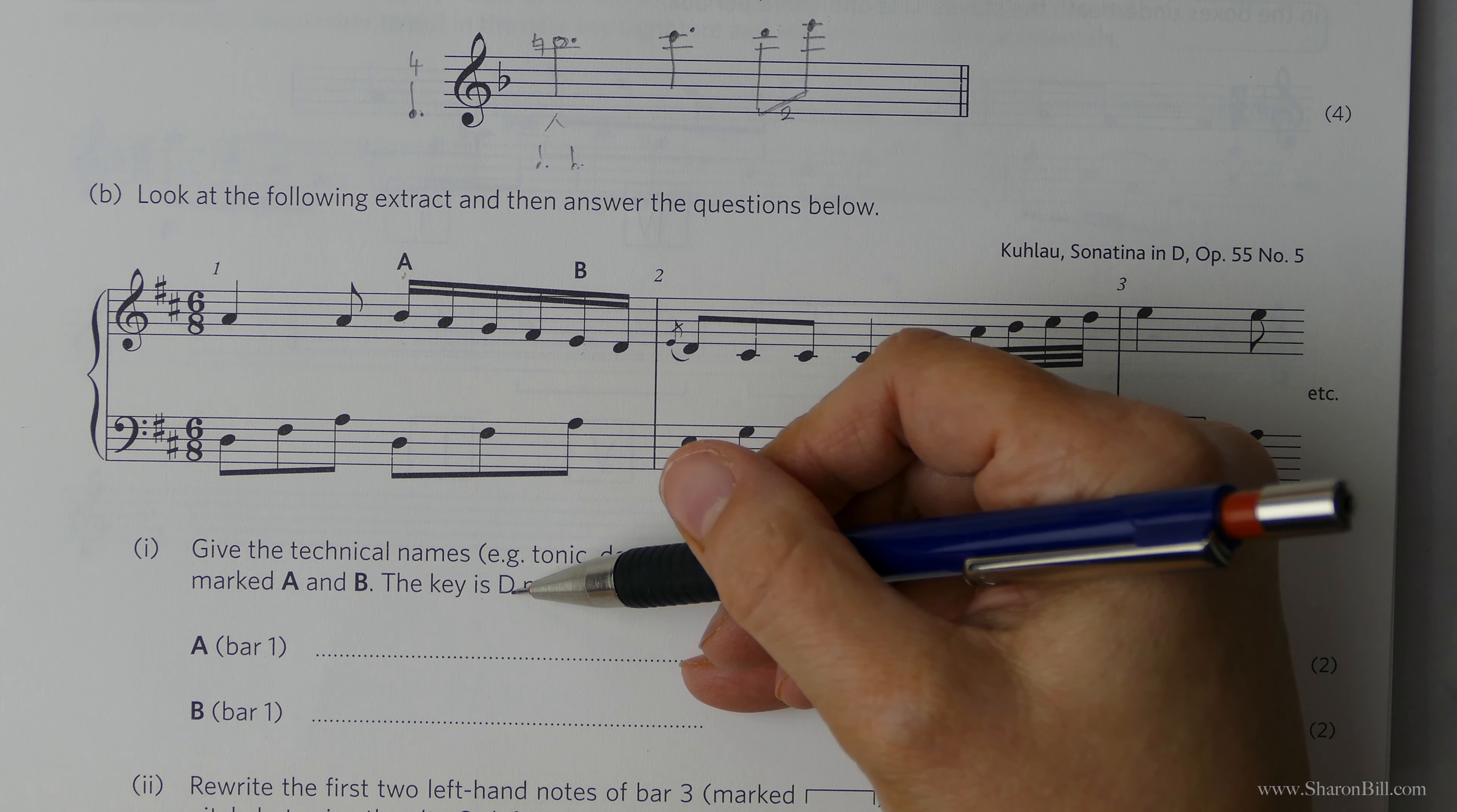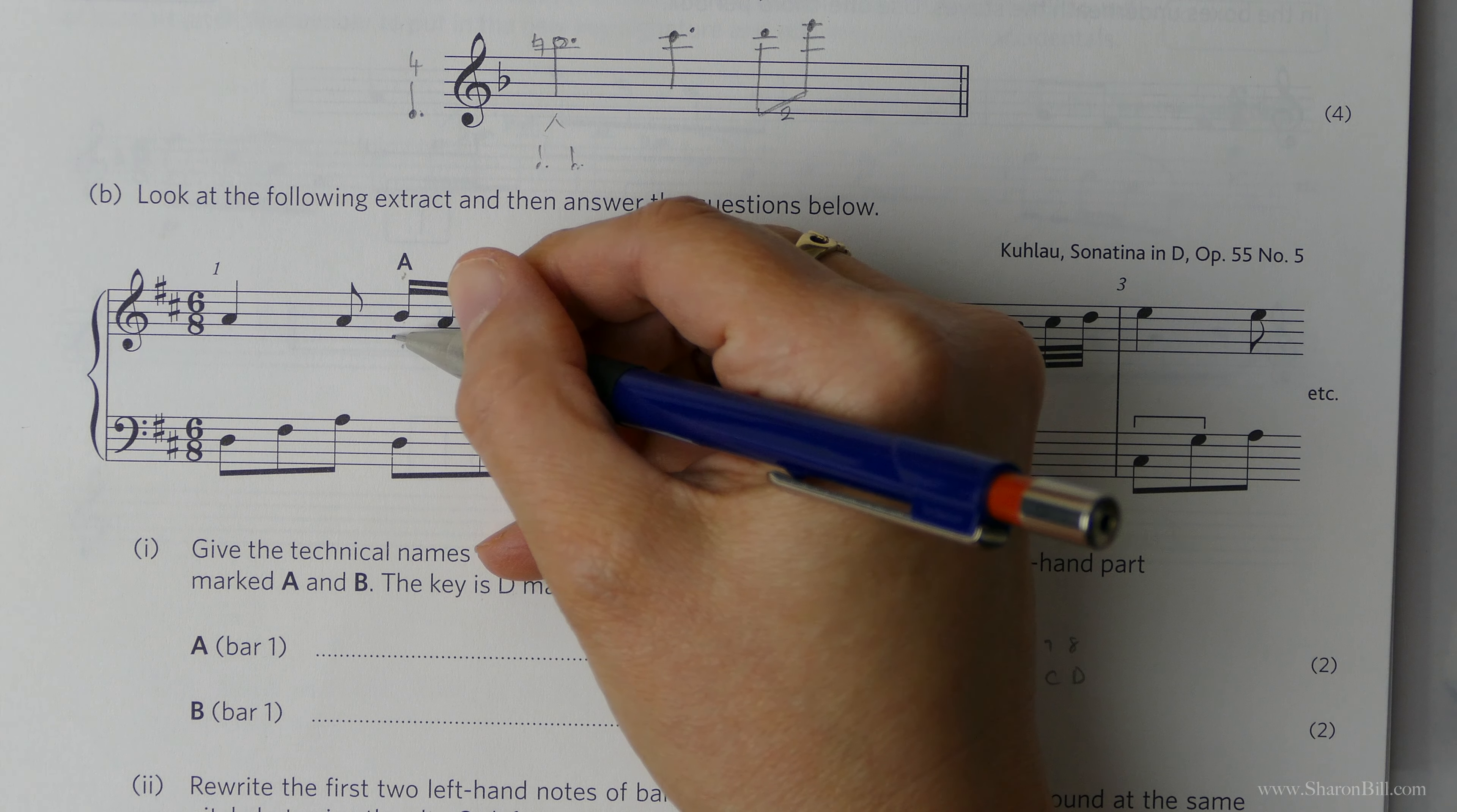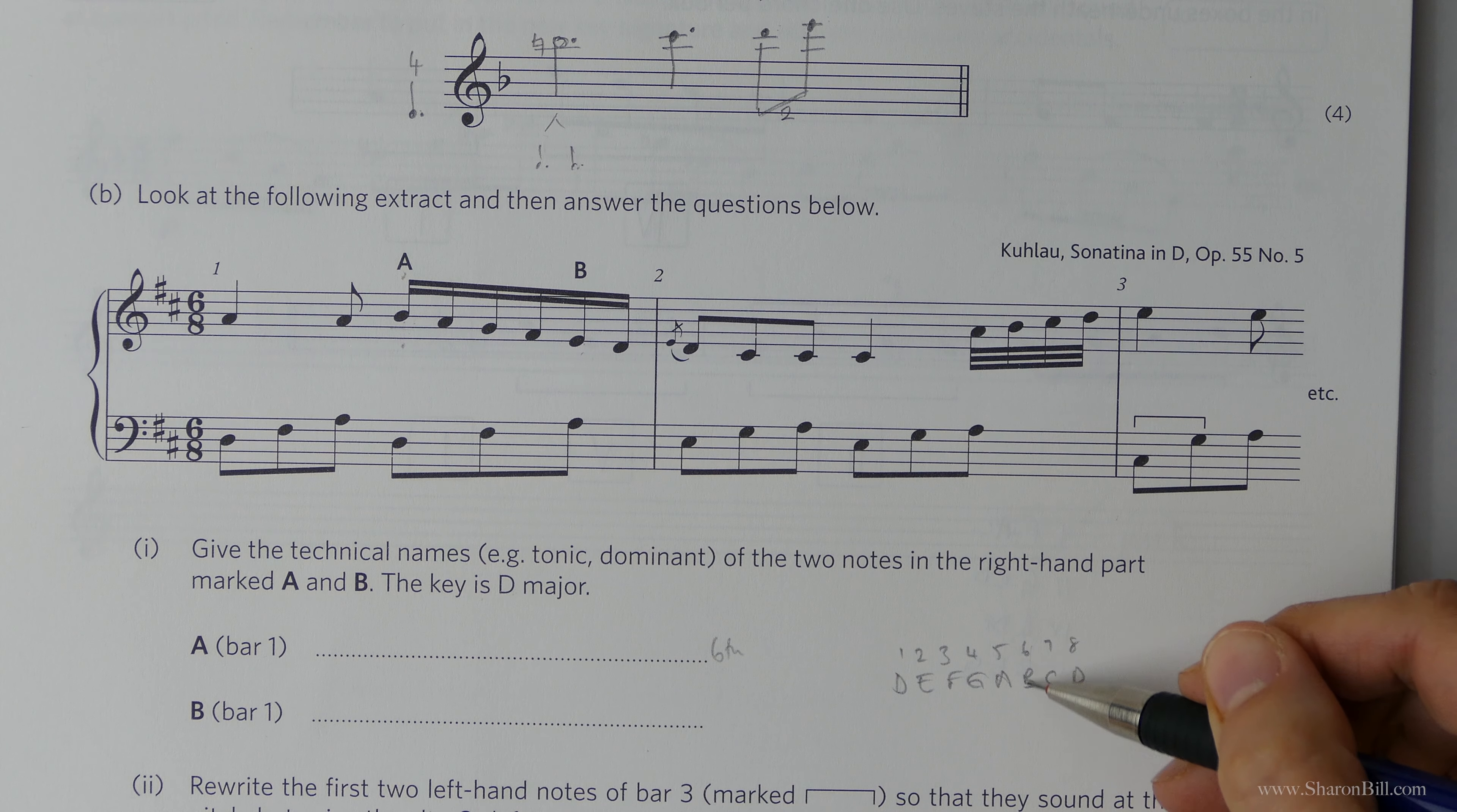So then A, we're counting from D as our tonic, so 1, 2, 3, 4, 5, 6. That's the sixth. And you can double check that and see that B is the sixth.